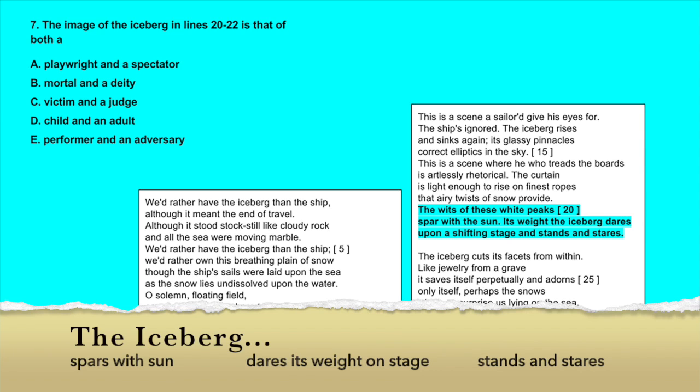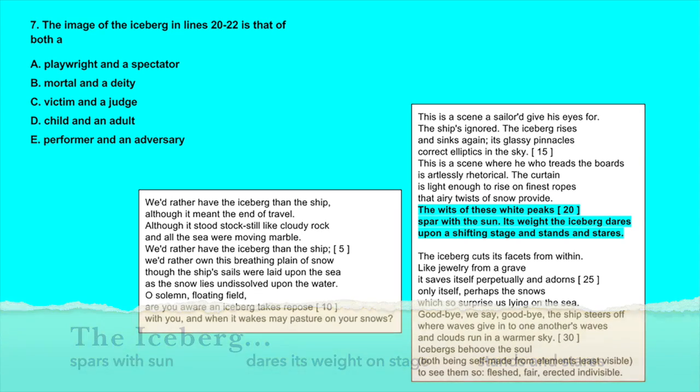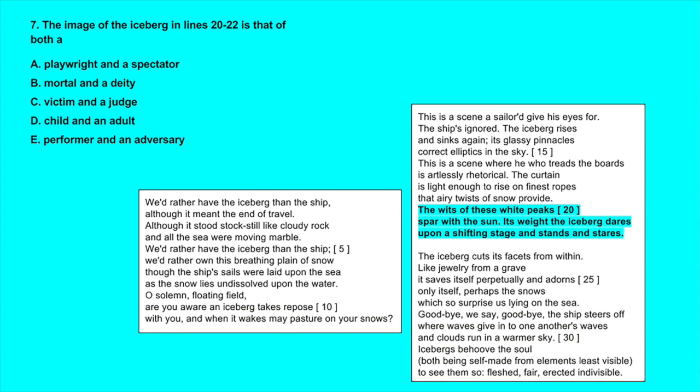So we have the wits of the iceberg's white peaks sparring with the sun, the iceberg is daring its weight upon the stage, and it's also standing and staring. Let's look at our choices and keep in mind that if one part is wrong, the whole choice is wrong. A, a playwright and a spectator - we don't have anything that makes us think that the iceberg is the playwright.